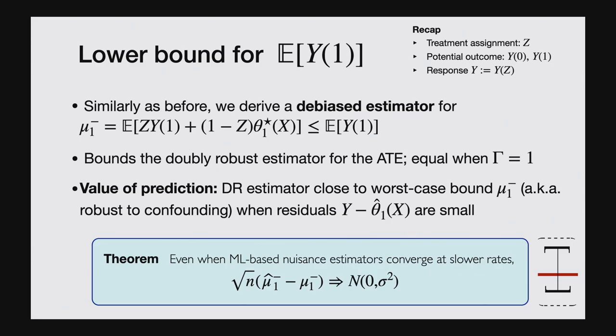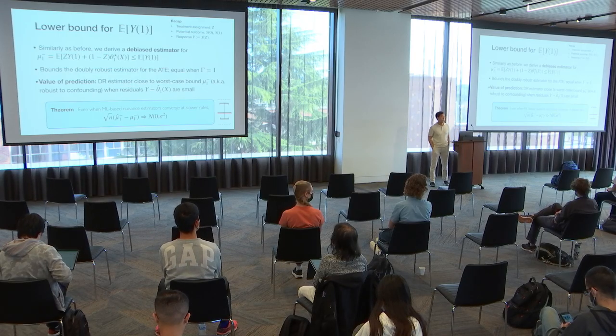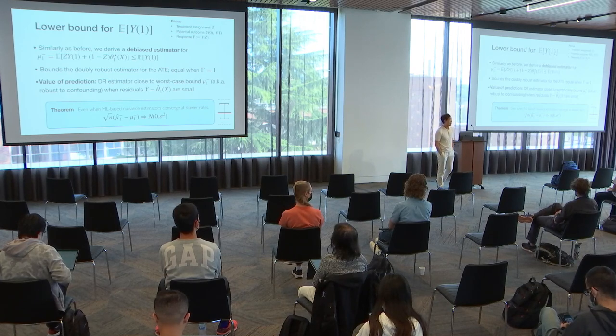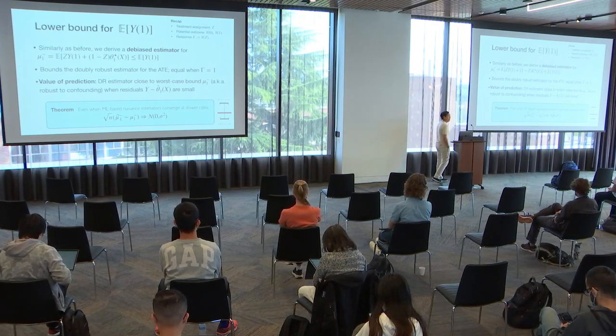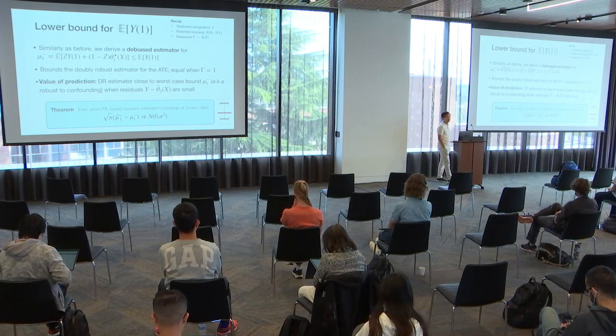On the question of what 'even ML' means: we need to assume a rate condition on the nuisance parameters. The debiased estimator has a second-order term that still needs to go to zero, so we need whatever rate is required to make that happen. Effectively, we've eliminated the first-order rate, so insofar as the Taylor expansion holds, I just need the second-order rate to go to zero.